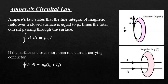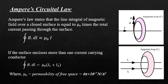The current carrying conductors I1 and I2 are enclosed by the Ampere's Circuital loop. Hence, the integral of magnetic field over a closed loop will be equal to µ0 times I1 plus I2.